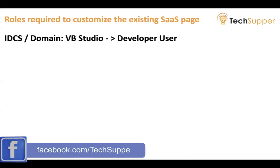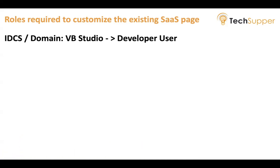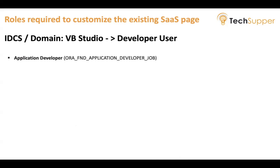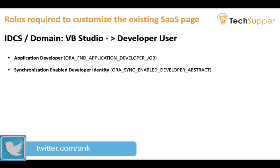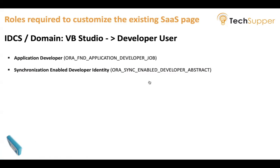If you want to become a Developer User, it depends on which role your admin provides to you. To become a Developer User you need to request either the Application Developer role (Aura FND Application Developer job) or the Synchronization Enabled Developer Identity. If these roles are not assigned, you will not have permission to access VB Studio.